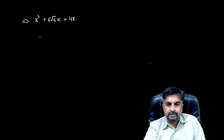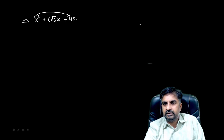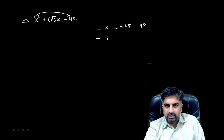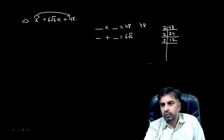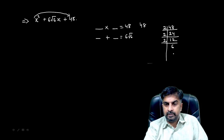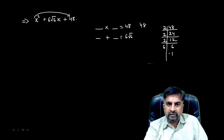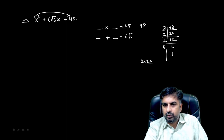Moving to the next question — again the same approach: multiply the coefficient of x², which is 1, with 48, so the product is 48. We need to find factors of 48 such that their addition equals 6√6. So again, find prime factors of 48: 2 × 24, 2 × 12, 2 × 6, 2 × 3 — giving three 2s and one 3. But here I am going to take 6 as a factor because I need √6. The factors become 2 × 2 × 2 × 2 × 6.